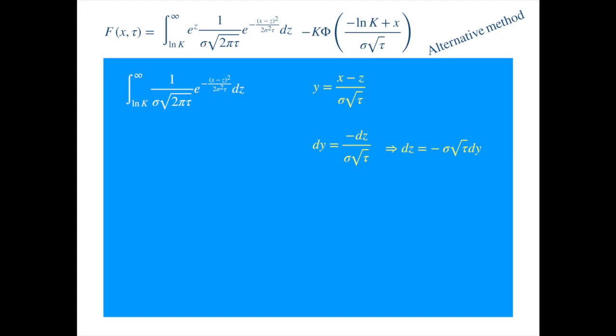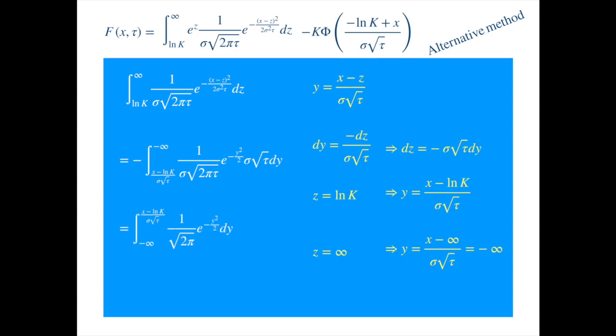Now the lower integration limit, which is log of k, becomes... And analogously, the upper integration limits. Now, substituting the four expressions into the integral, we get... And reversing the integration interval, we get the distribution of the standard normal as before.